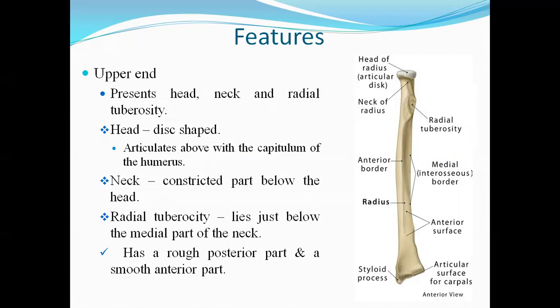The head of the radius is disc-shaped and the upper surface is slightly concave. The upper surface articulates with the capitulum of the humerus to form the radial part of the elbow joint. The surrounding disc on the medial side articulates with the radial notch of the ulna.